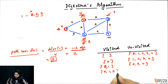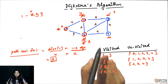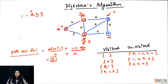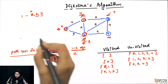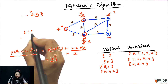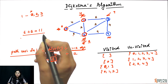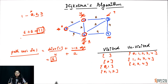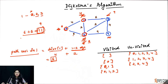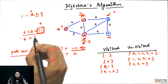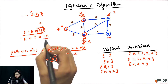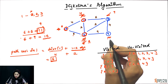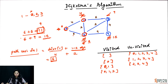Hum two ko pick karenge aur two ko visited mark kar diya. Two visit ho chuka hai. Two ke neighbors ko explore karenge: zero, one, three, four hai. Sirf unvisited neighbors pe focus karenge, that means three and four. Agar hum two ke through three tak pahunchte hai, tho two tak paunchne ka cost is six, two se three paunchne ka cost is five, tho two ke through three tak paunchne ka cost will be eleven. Three ka already cost hai nine — already mein nine units mein three tak pahunch paa raha hoon, tho obviously eleven waala path se update nahi karenge. Minimum distance from source to three will stay as nine. Same kaam four ke liye: two tak paunchne ka cost is six, two se four tak jaane ka cost is nine, tho mein fifteen units mein four tak reach kar jaungi. Pehle four ka distance is infinite, 15 is obviously better, I will update it with 15.